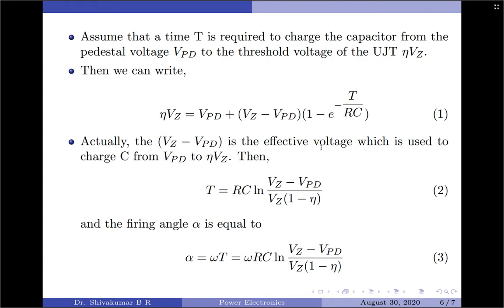The difference voltage (Vz − Vpd) is the effective voltage used to charge the capacitor from Vpd to η·Vz — this is the factor that causes the capacitor to charge, and the charging time is given by the second part of the equation. Therefore, the time T for charging the capacitor from Vpd to η·Vz is: T = RC · ln[(Vz − Vpd) / (Vz · (1 − η))], where η is the intrinsic standoff ratio of the UJT, varying between 0.5 to 0.8.